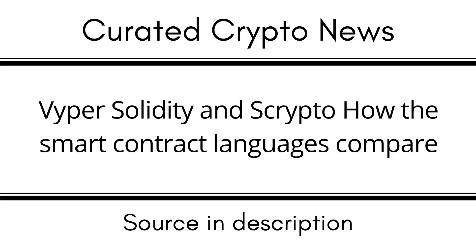Scrypto is an asset-oriented smart contract language developed by Radix. It is based on Rust and keeps most of Rust's features while adding specific functions and syntax for Radix Engine v2. Since Scrypto is asset-oriented, it can interact with assets such as tokens, which are a type of resource within the language. In languages like Solidity, ERC-20 tokens exist as smart contracts on the EVM, whereas assets within Scrypto are resources that exist within containers and vaults.